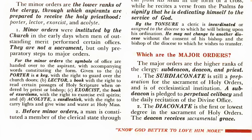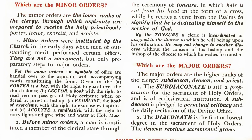The major orders are the higher ranks of the clergy: subdeacon, deacon, and priest. The subdeaconate is still a preparation for the sacrament of holy orders and is of ecclesiastical institution. A subdeacon is pledged to perpetual celibacy and the daily recitation of the divine office.